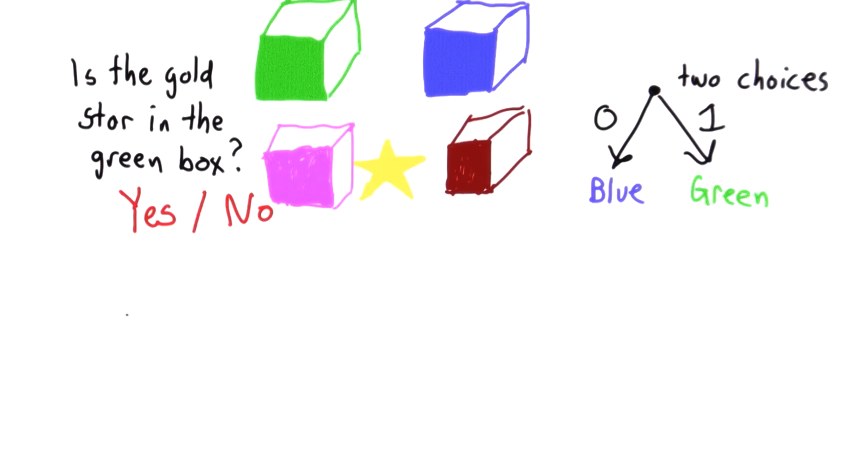So can we figure out which box the gold star is in with just yes, no questions? Well, one way to do that would be to ask four questions. We could say,